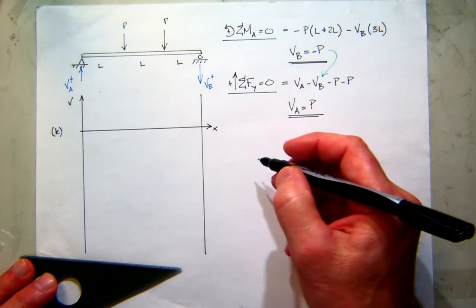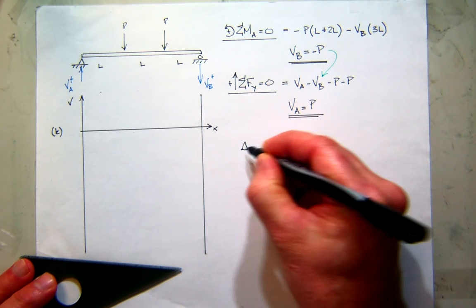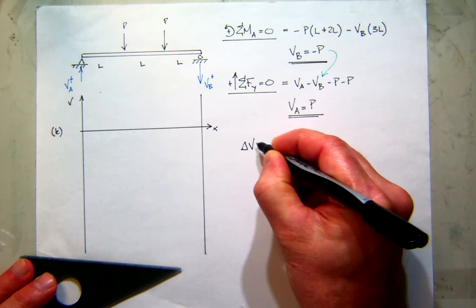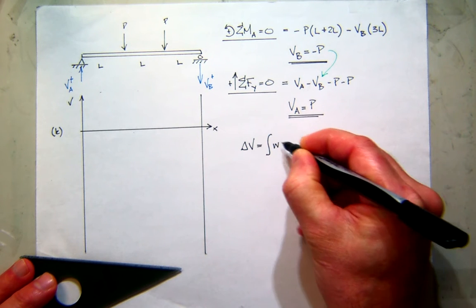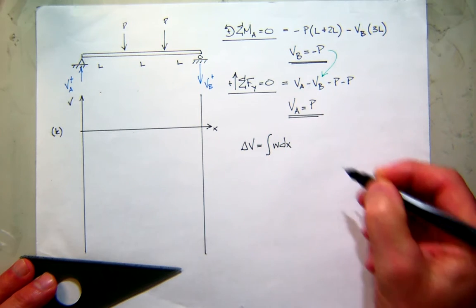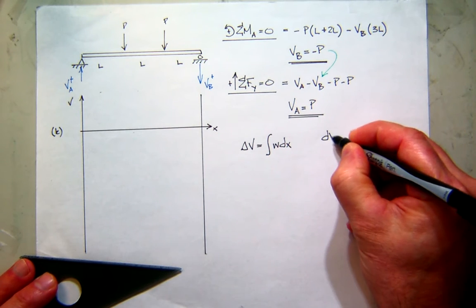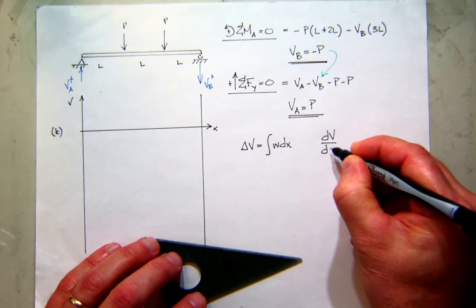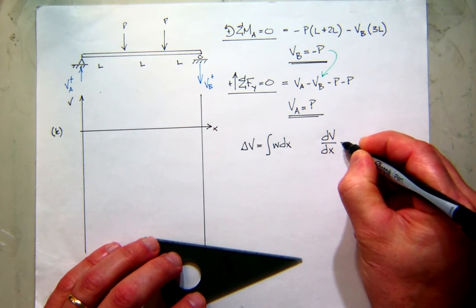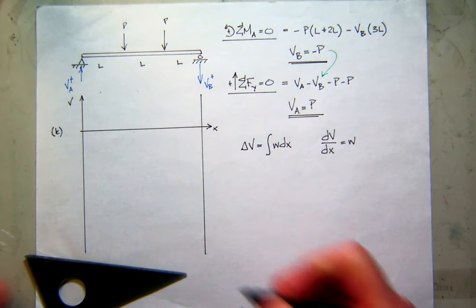Now I'm going to construct my shear diagram based on what I already know and the loading. My two key relationships are: the change in shear is equal to the area under the load curve, and the shape of the shear diagram — given by the slope — is equal to the load.